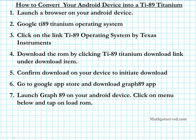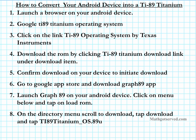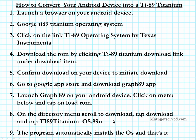What you want to do now is load the TI-89 operating system or ROM that you just downloaded from the Texas Instruments website. When you tap on Load ROM, this is where your knowledge of the directory structure of your Android device comes into play. Scroll to the Download folder, or whichever folder you saved the TI-89 operating system in. When you tap on the folder, you're going to see a file named TI-89-Titanium-OS.89U — just tap on it. The program automatically installs that operating system.